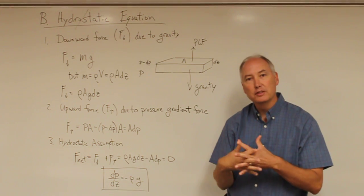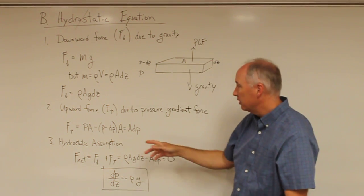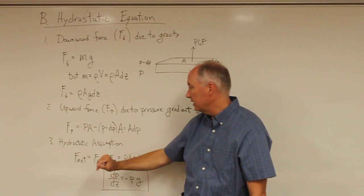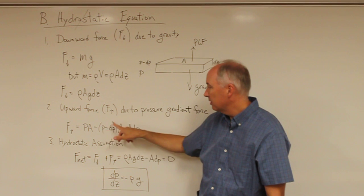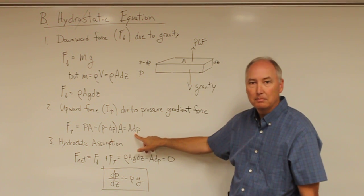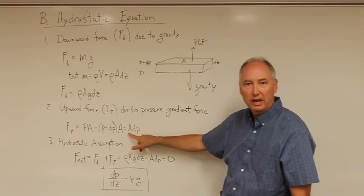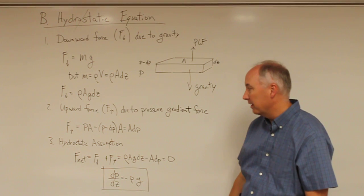If you take the difference of those two forces at the top and bottom of the layer, then you'll get the upward directed pressure gradient force. So you have the force at the bottom, the force at the top, you subtract those, and mathematically you'll come up with the cross-sectional area times the dP, which is the change in pressure from the top to the bottom of the layer.